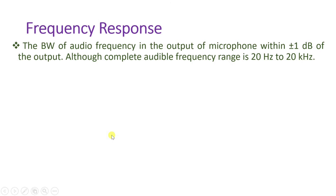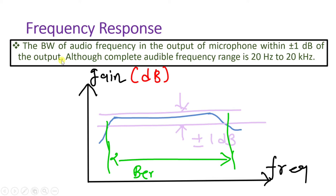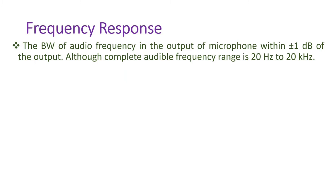Frequency response is the bandwidth of audio frequency in the output of the microphone within plus or minus 1 dB of output. We look at what is the bandwidth of audio frequency, and that bandwidth should be within the range of plus or minus 1 dB response of output. A good microphone has a frequency response that is flat over all audible frequencies. The audible frequency range is from 20 Hz to 20 kHz, and the response should be flat across that range.